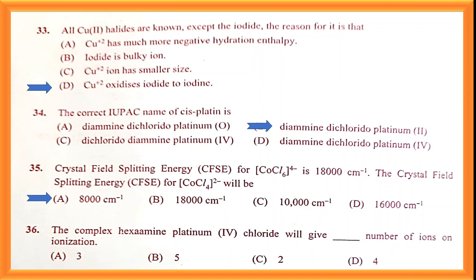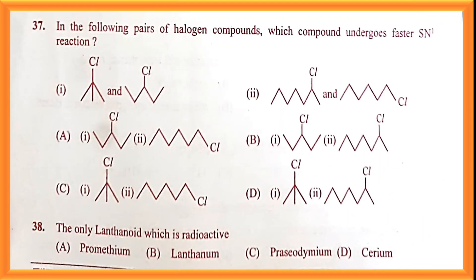Question number thirty-five: if you go on solving you will get 8000 cm⁻¹. Question number thirty-six: your answer would be option B. Question number thirty-seven: option D is the correct answer because option D contains both a tertiary carbocation and a secondary carbocation. SN1 reactions proceed through carbocations, and carbocation stability determines reactivity. In option one, the second compound is symmetric on both sides; in option D it is unsymmetric — hence option D is the correct answer.